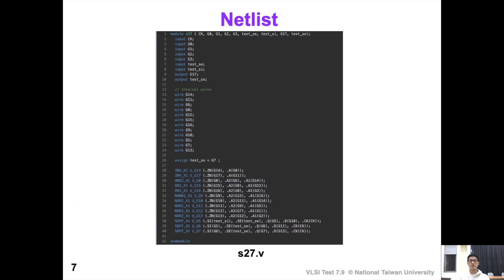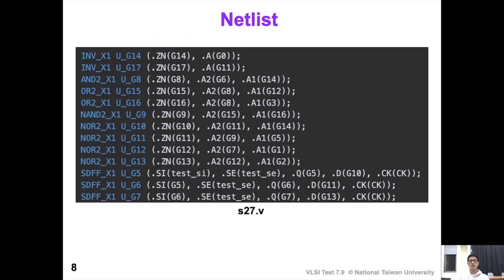After the installation, I am going to show an example netlist that FAN ATPG can perform automatic test pattern generation and fault simulation on. As you can see, this example netlist is a gate-level Verilog file. The first word of each row is the primitive gate type of each gate. The gate types include inverter, AND gate, OR gate, etc.